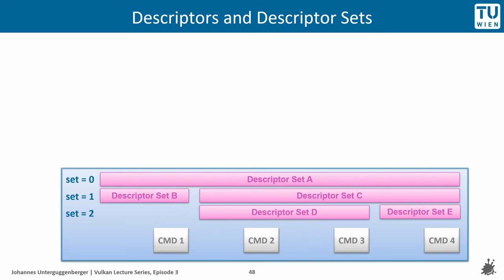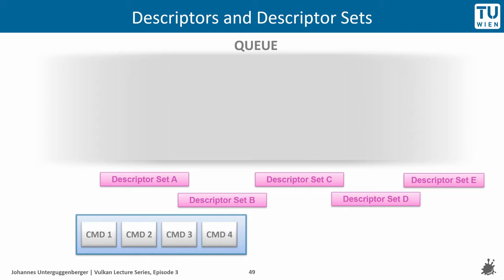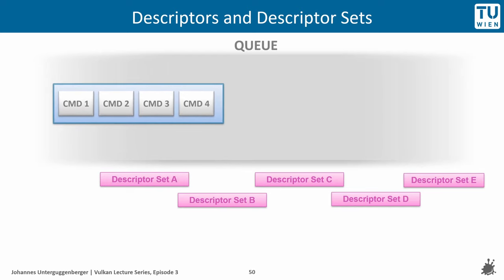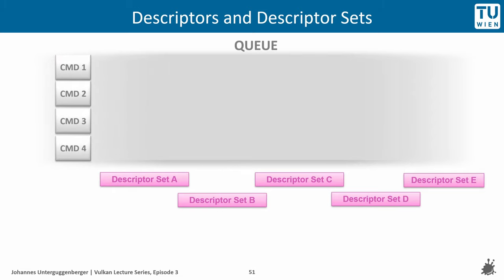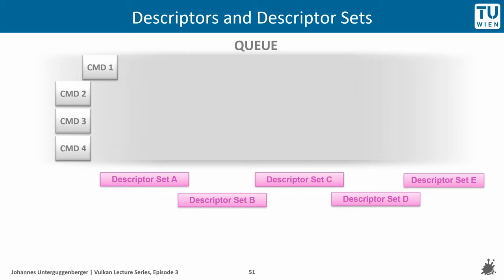Once the command buffer has been completely recorded with the proper descriptor sets bound before recording the commands, this work package is submitted to a queue to be processed by the GPU. The GPU compiles the information and descriptor references stated within the command buffer, schedules the beginning of processing in submission order, and based on the information provided, establishes all relevant resource bindings through the stated descriptors so that commands have access to all resources they need.